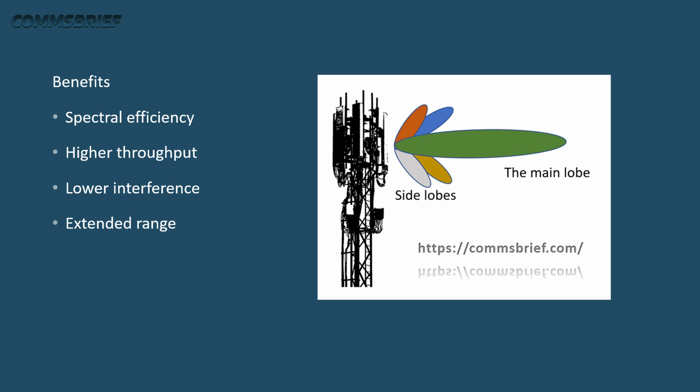Finally, the last benefit is extended range. Massive MIMO has three-dimensional beamforming — 3D beamforming — which is a completely different kind of beamforming. It creates horizontal and vertical beams of the signal so that it can reach people at different ranges, both in terms of distance and height, for example in high-rise buildings.